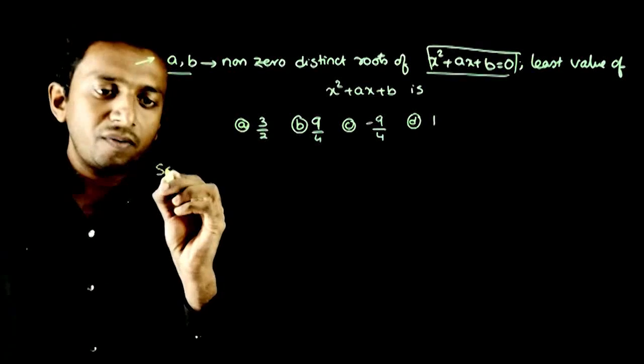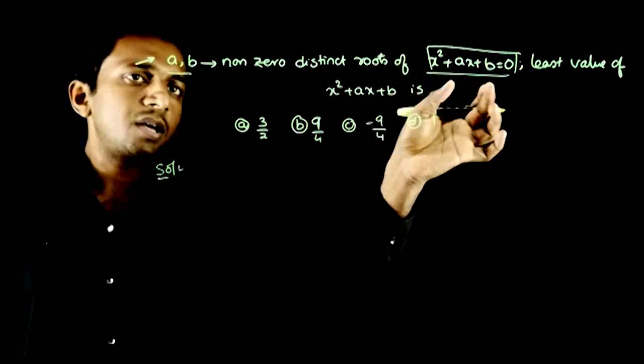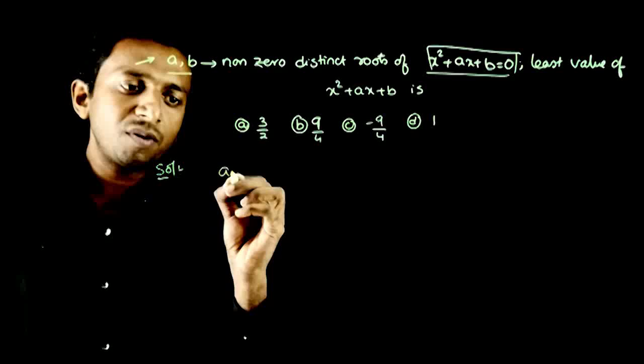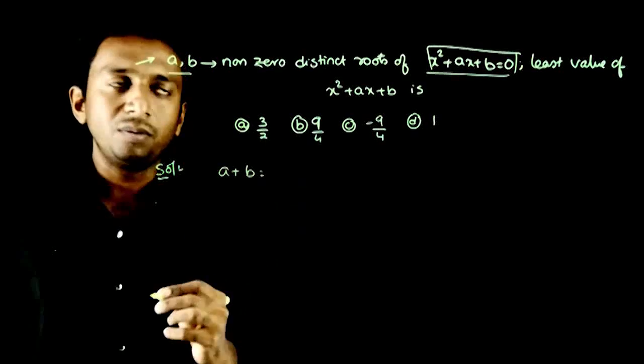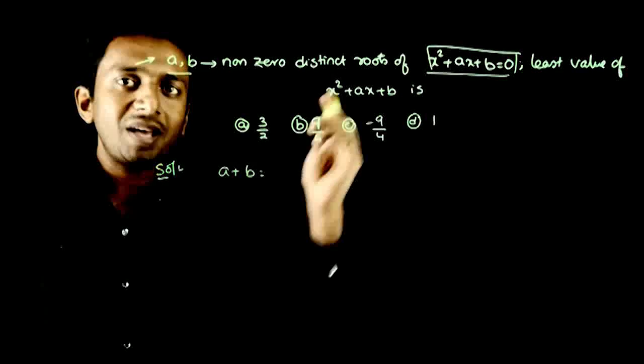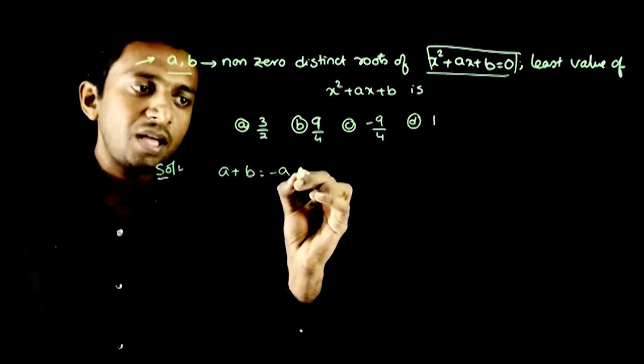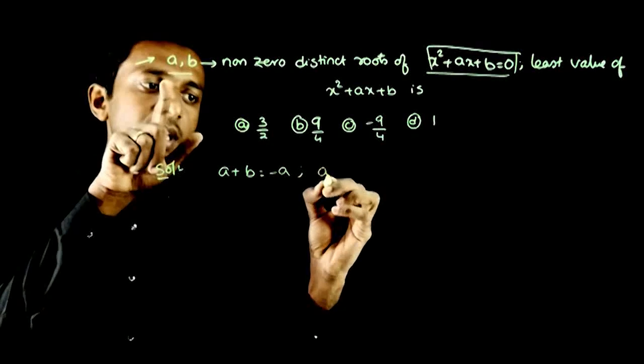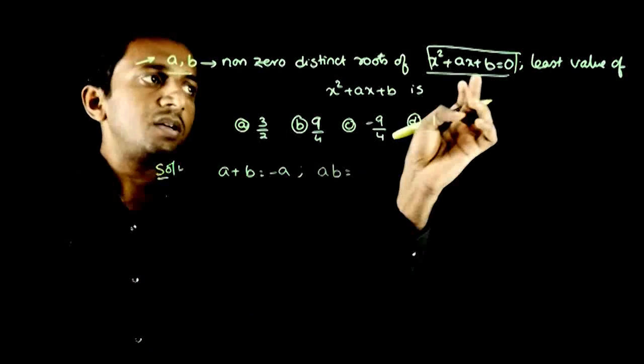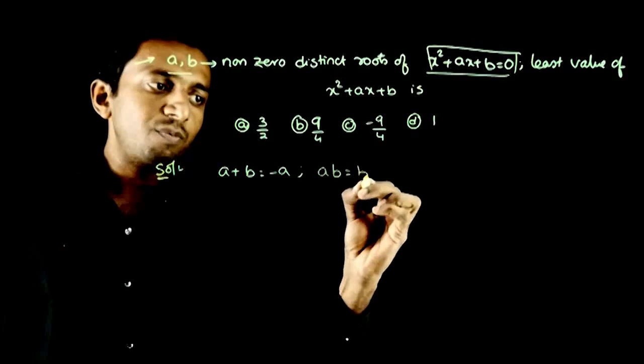So how do we analyze this question? First, the roots are given as a and b. What is the sum of the roots? a + b equals the negative of the x coefficient, which is -a. And the product of the roots ab equals c/a, that is b.